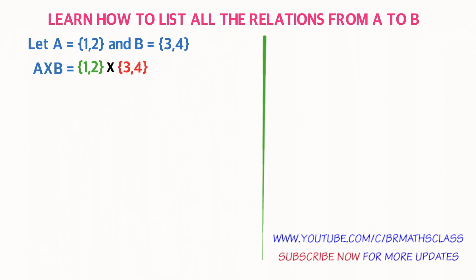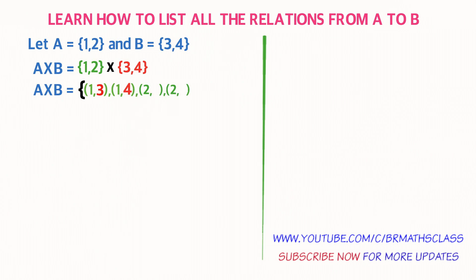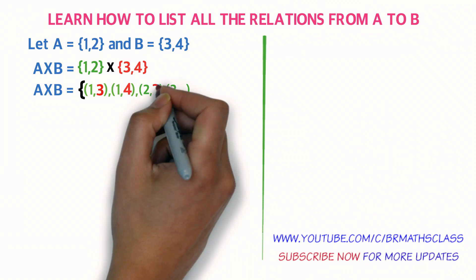How to write A cross B? You take the first element in the first set and pair it with all the elements of the second set. You take element 1 in set A and pair with all elements of set B to get the ordered pairs. Then you take the second element in set A and pair with all elements of set B to get the next ordered pairs.